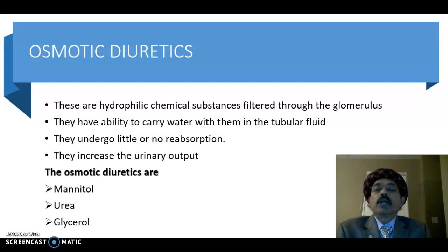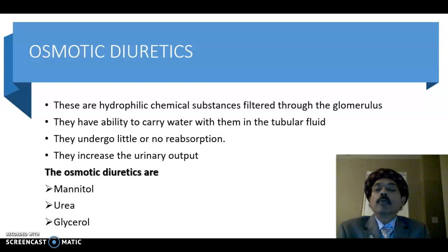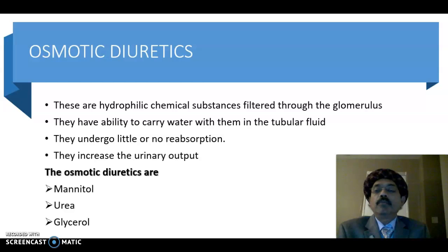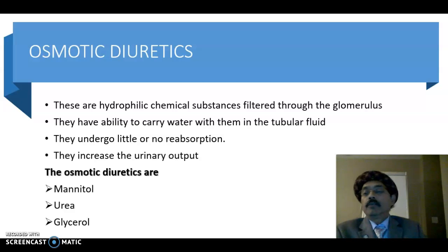What are the osmotic diuretics? These are mannitol, urea, and glycerol. The most commonly used is mannitol, which is the prototype. We also have isosorbide as an osmotic diuretic.